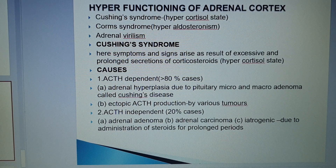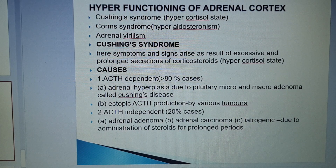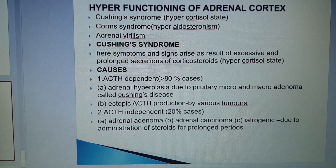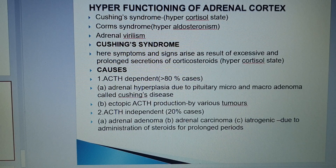Clinical features of Conn's syndrome: water and sodium retention leads to hypertension and edema. Loss of potassium (aldosterone causes potassium loss) leads to hypokalemia and metabolic alkalosis, causing severe muscle weakness, difficulty walking, and abdominal distension. Sometimes patients develop periodic muscle paralysis, polyuria, and tetany.